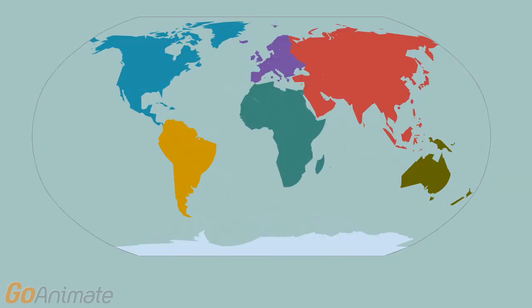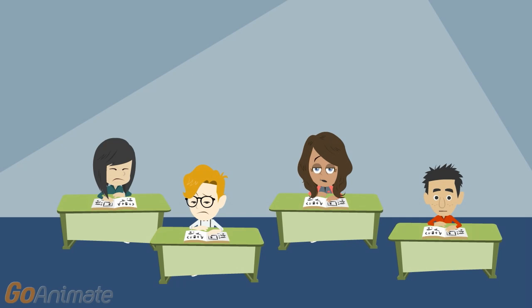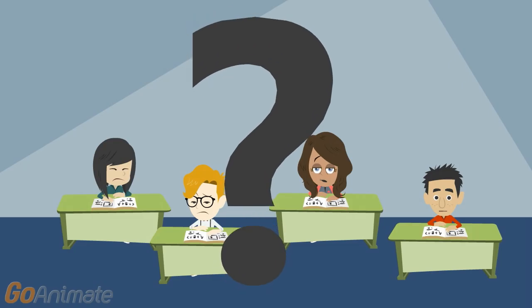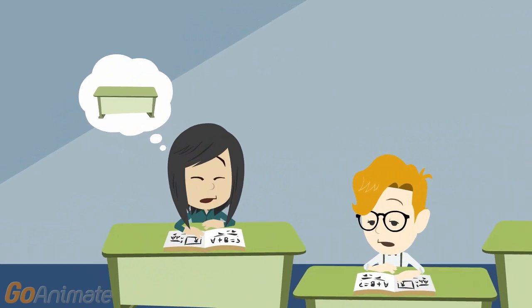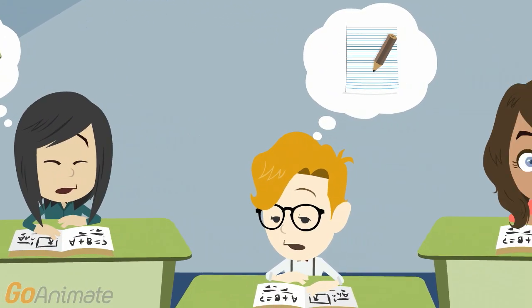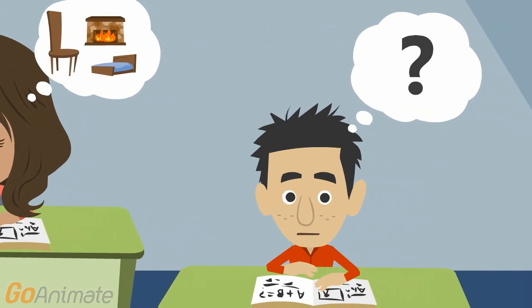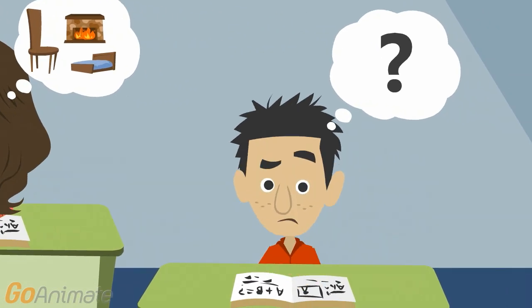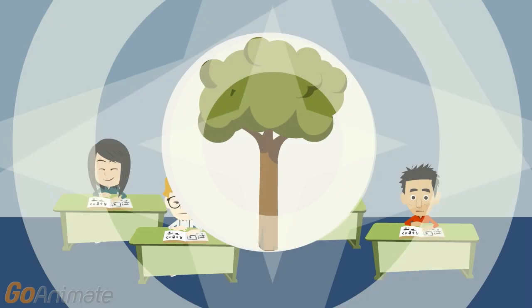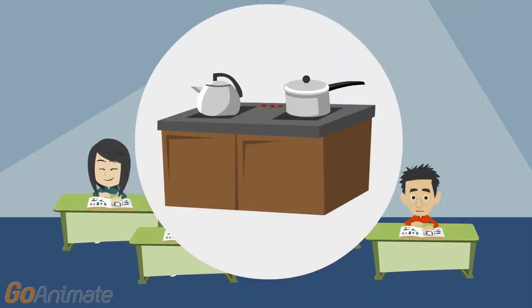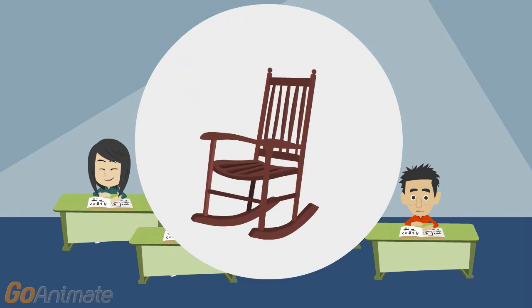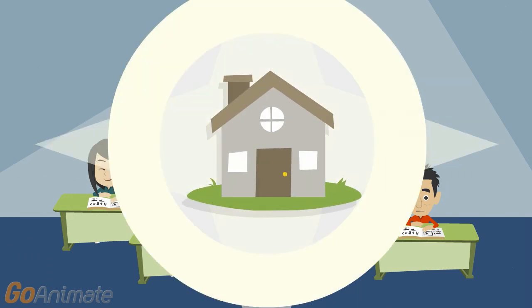Although it might not be something you see or hear about every day, deforestation is a problem that is happening all over the world and has been for many years. You might be wondering, how does this affect me? Why should I care? Think about the desk that you're sitting at, and the pencil and paper you're writing with, along with the majority of the furniture you use at home. What do they all have in common? They're all made from trees. We use trees to make a lot of different products that we use every single day, which means we have to cut down a lot of trees to make them.